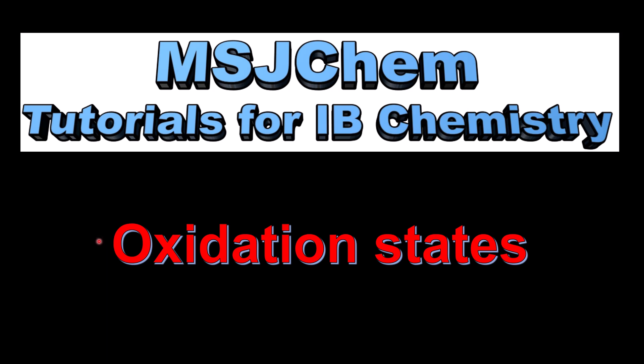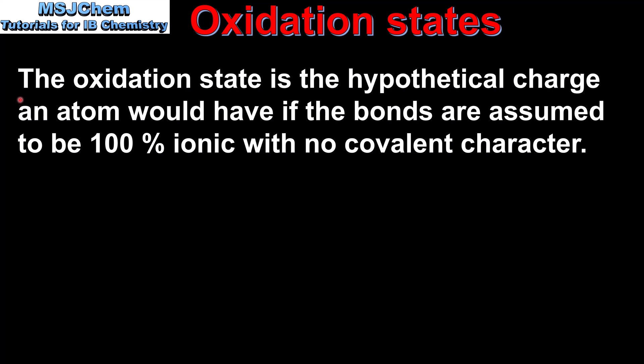This is MSJChem. In this video I'll be looking at oxidation states. We'll start with a quick introduction: the oxidation state is the hypothetical charge an atom would have if the bonds are assumed to be 100% ionic with no covalent character. So oxidation states assume 100% ionic bonding with no covalent character.